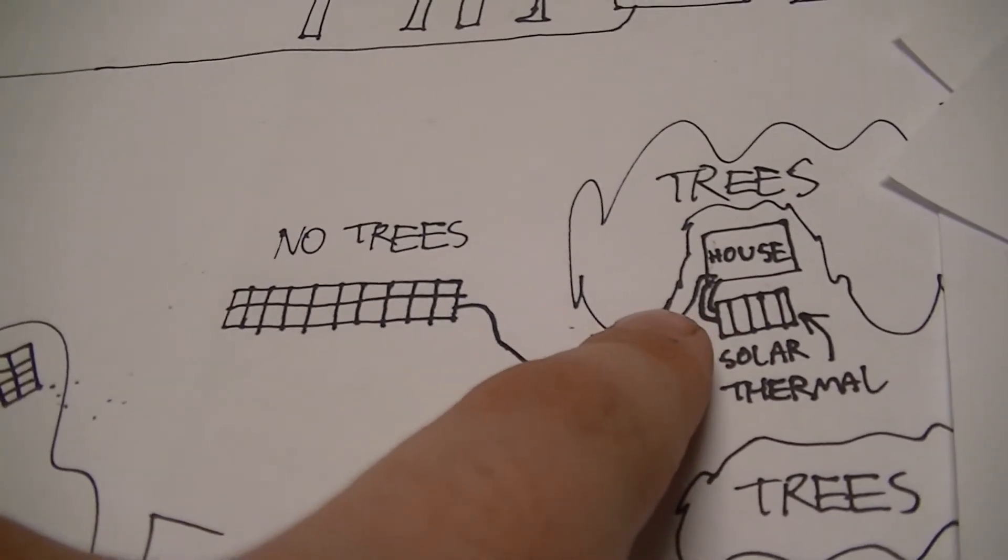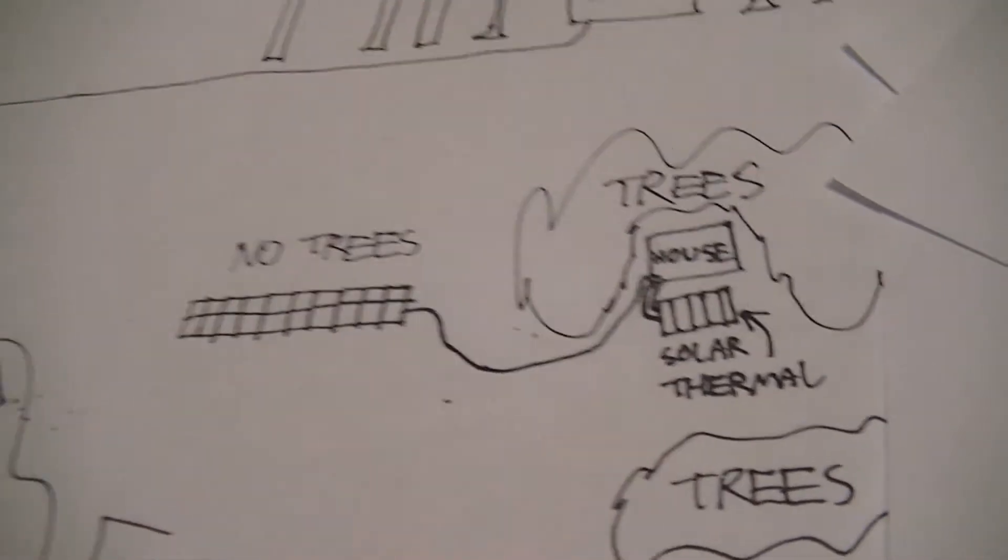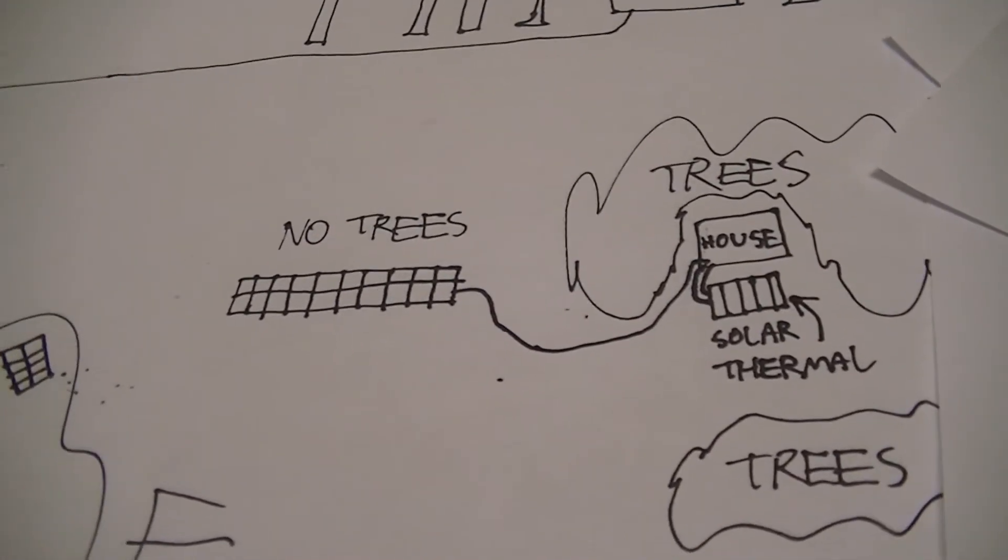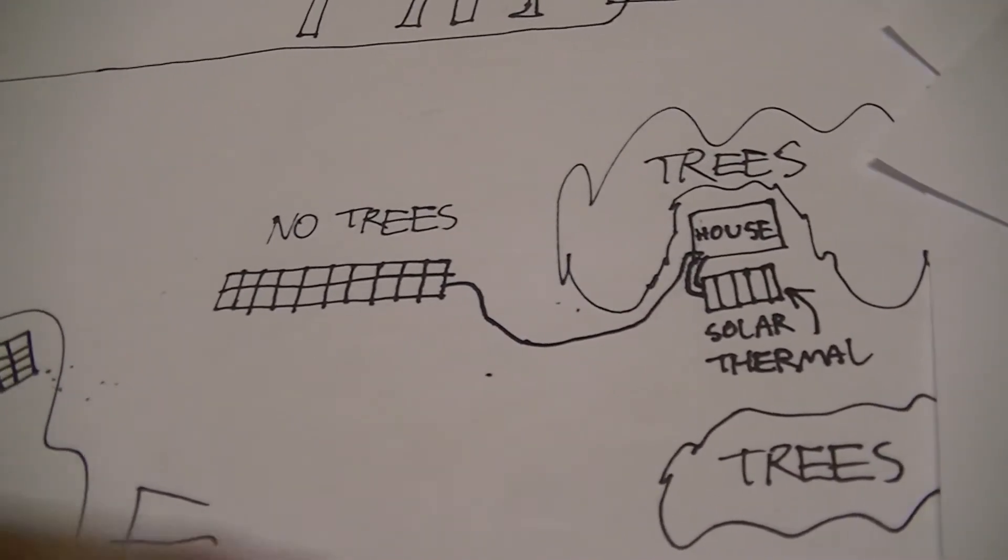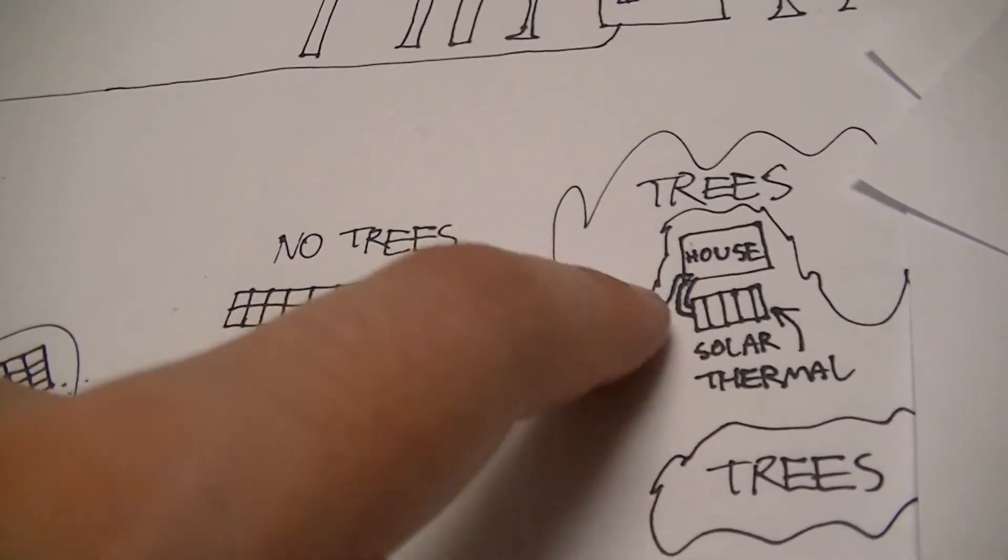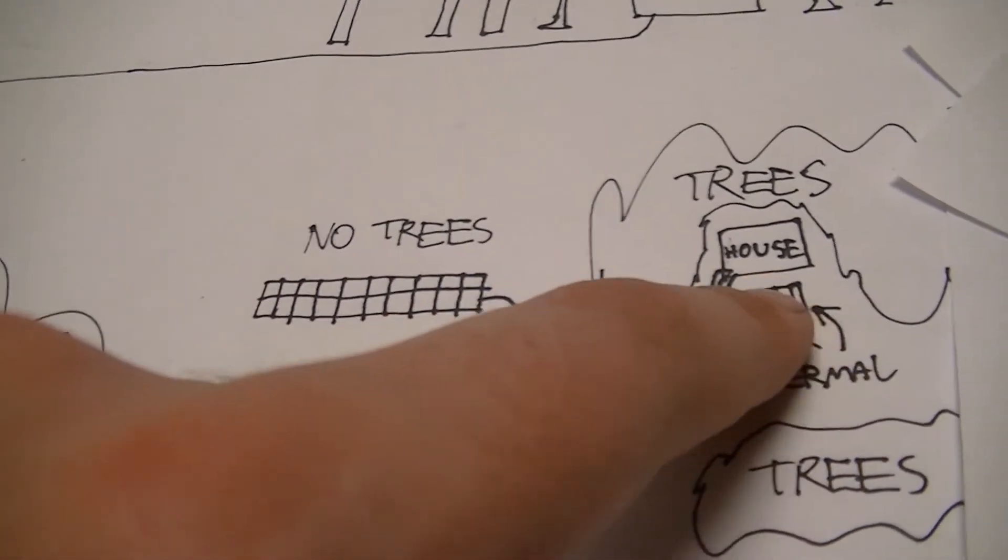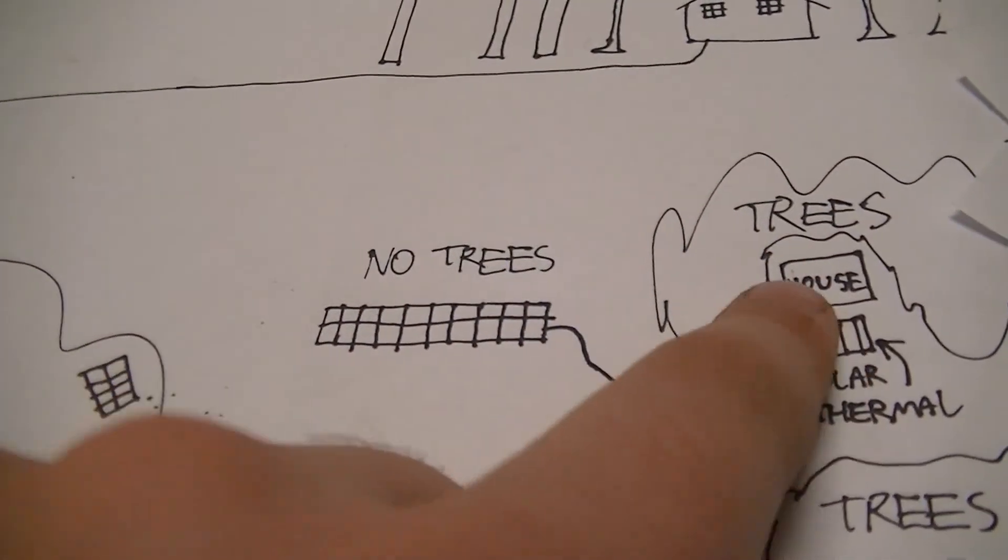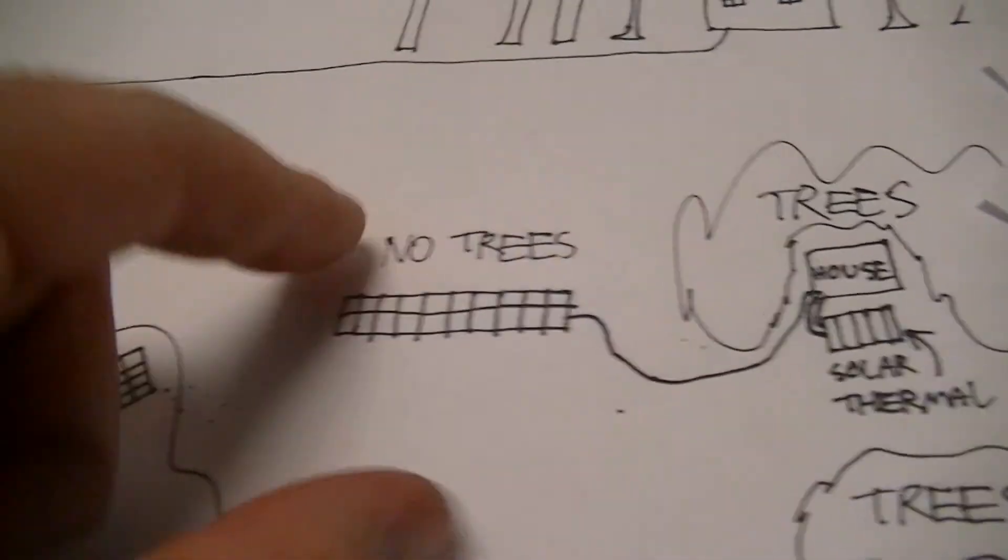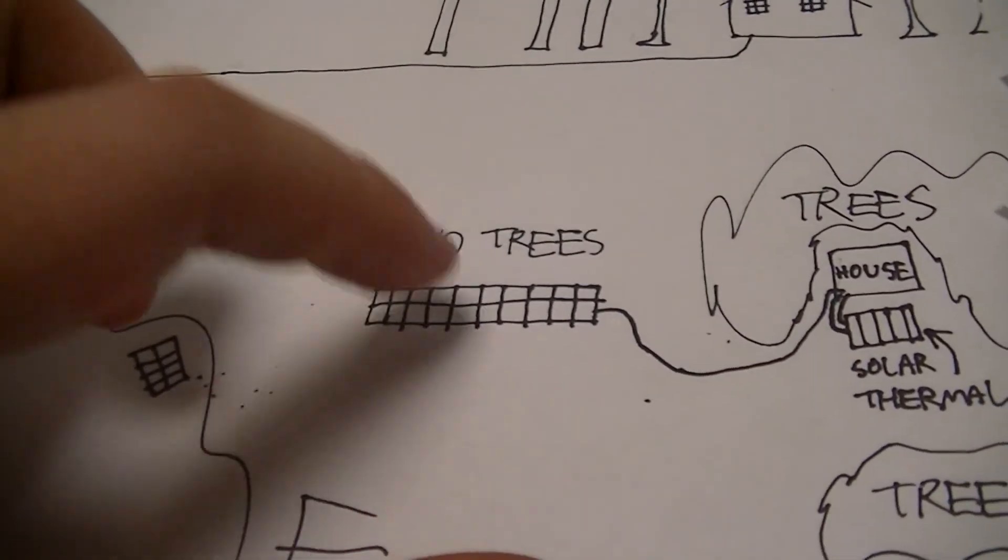And because it's a lot easier to run electricity than it is plumbing or ducting, the solar collector can be mounted right next to the point of load and wires can be run to any suitable location where the photovoltaic array can be located.